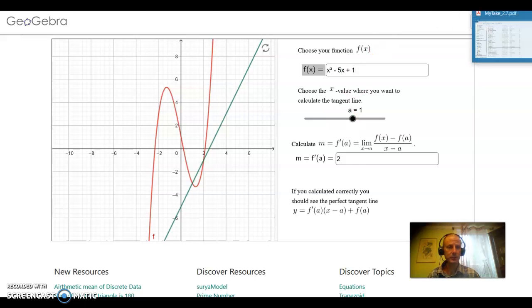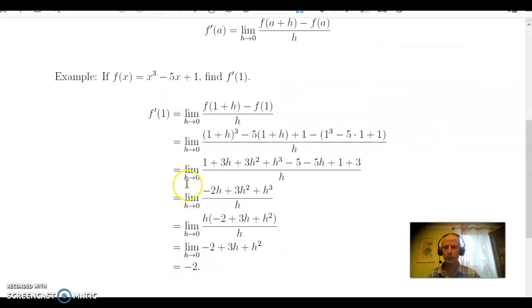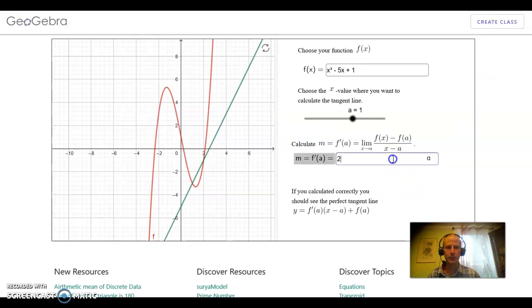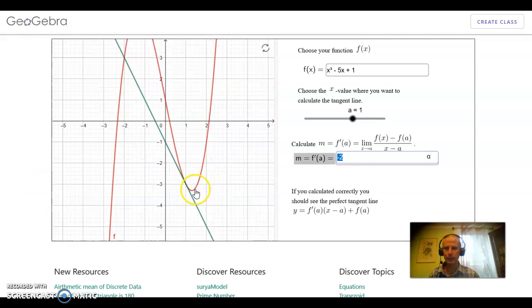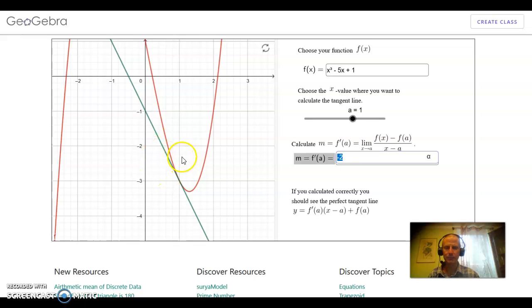The point was still 1. And if memory serves, in the previous example, we calculated the derivative at 1 to be minus 2, which means that the slope of the tangent line at 1 is minus 2. And therefore, I want to input minus 2 in for m. And lo and behold, at 1, we are getting that perfect tangent line again, giving us more confidence that we calculated the answer correctly.